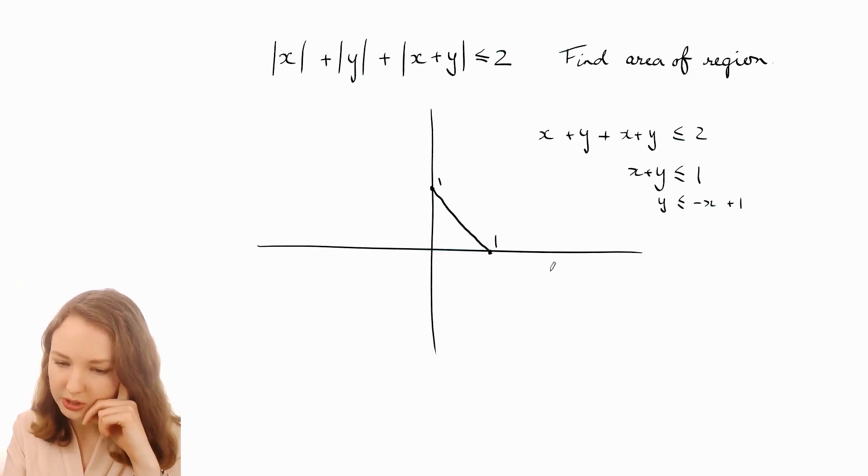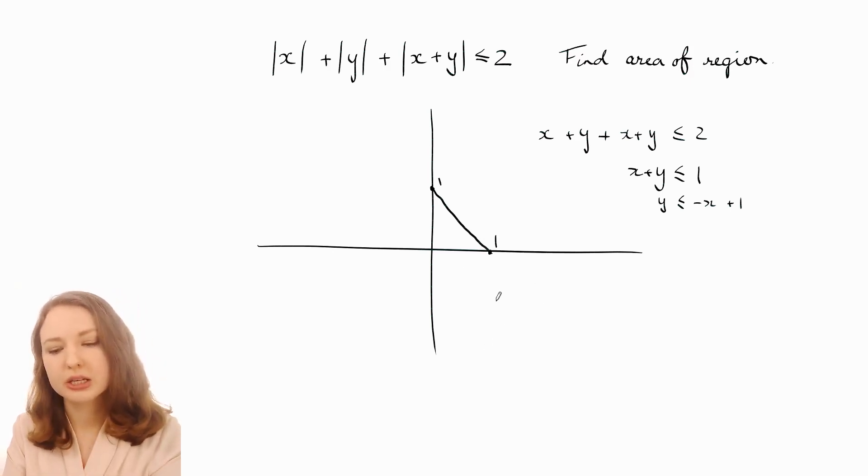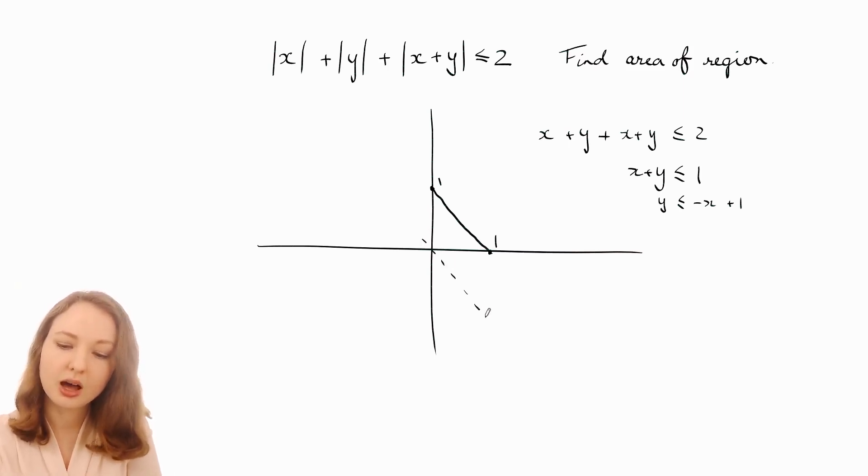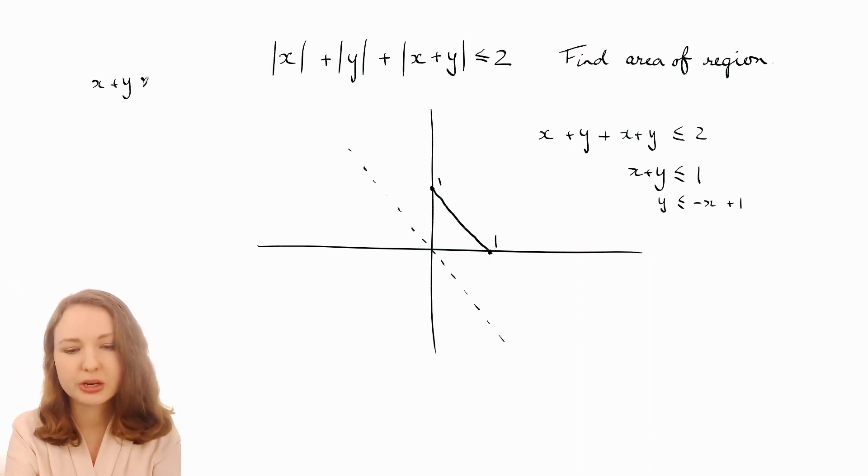Now if we go down here, then y is going to be negative and x is going to be positive, but x+y could be negative or positive depending. So we're going to have to consider two different cases: x+y is greater than zero or x+y is less than or equal to zero. And that's going to split along that line, because for example if x+y is greater than zero, that means y is greater than -x. So if you graphed y equals -x, that would be this line. So this region is going to be different from that region.